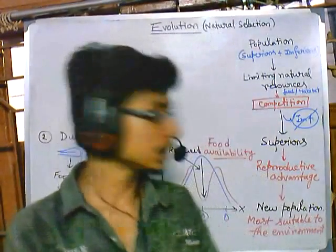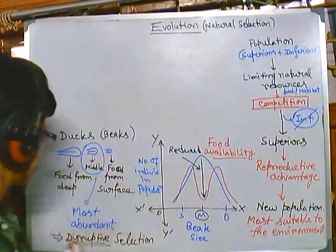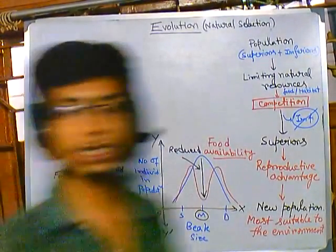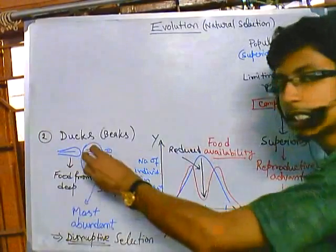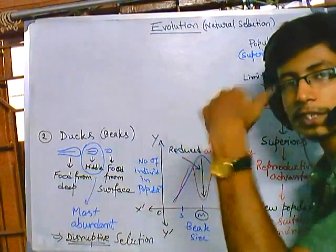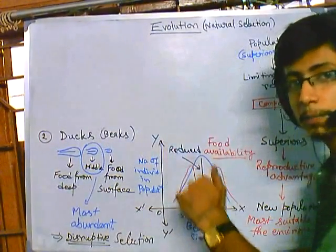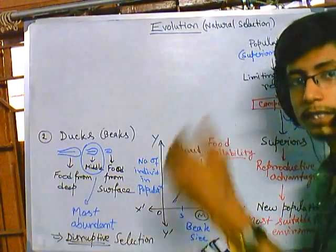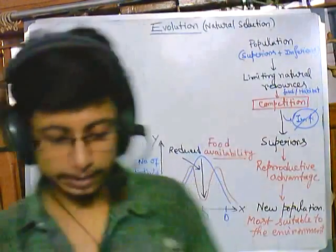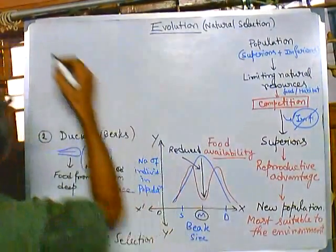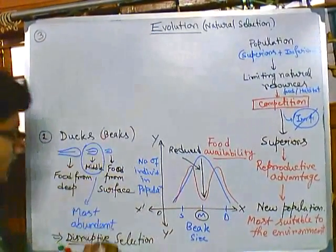We have just discussed disruptive selection, where the most abundant trait in a population gets least importance after natural selection. Now we will be discussing the third type of natural selection.